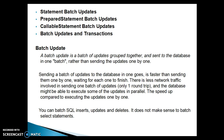First of all, what is a batch update? A batch update is a batch of updates grouped together and sent to the database in one go, rather than sending the updates one by one. Sending batch updates to a database in one go is faster than sending them one by one and waiting for each one to finish. There is less network traffic involved, and the database might be able to execute some of the updates in parallel, which speeds up performance compared to executing updates one by one.